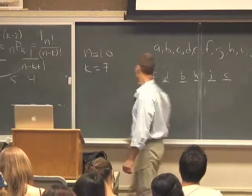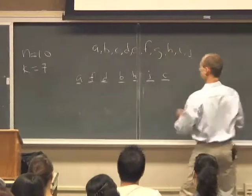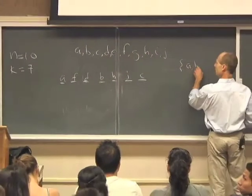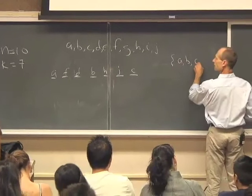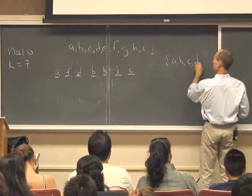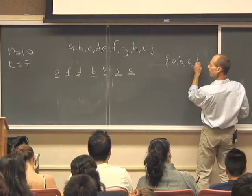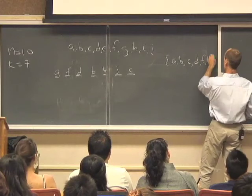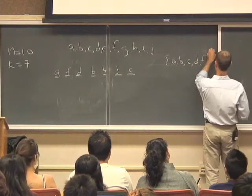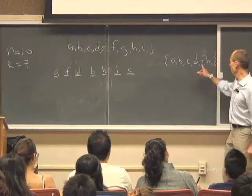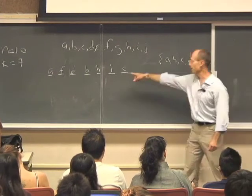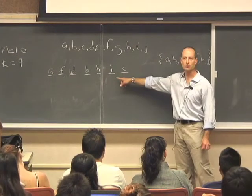There's a different way we could get there. We could first say, oh, I'm going to pick the set A, B, C, D, F, H, J. OK, and then I'm going to put these seven things into some particular order. And that's an example of an order I could put those seven things into.